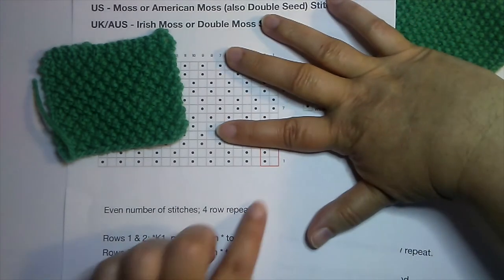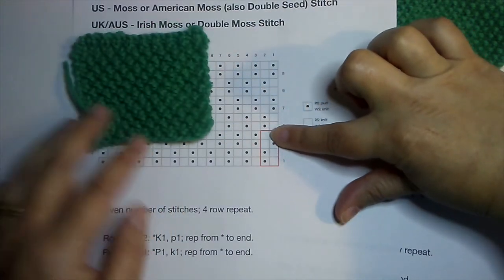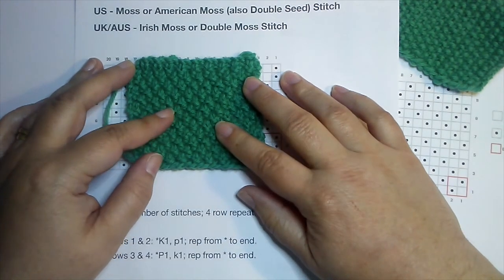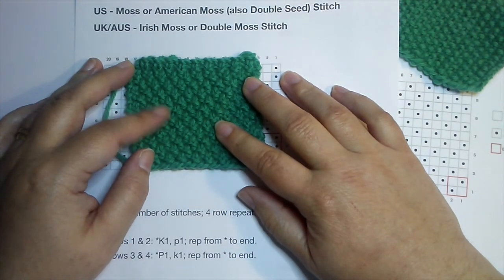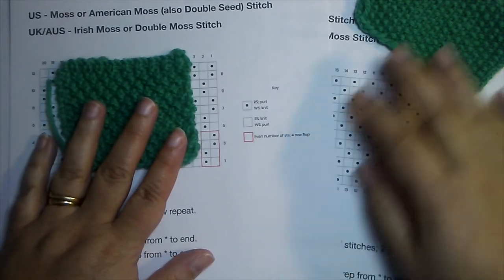If we just continued knit one, purl one, we'd have rib. But on our next set of stitches, we break that pattern, and we get what in America is referred to as moss, or American moss. Or if you're in the UK or Australia, it might be called Irish moss or double moss.